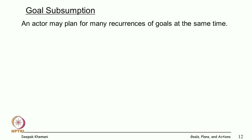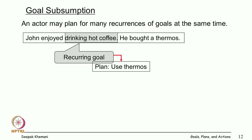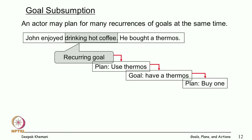There are two kinds of goal interactions: between the goals of one person, and between the goals of different people — both can be positive or negative. One is goal subsumption: for example, 'John enjoyed drinking hot coffee and he bought a thermos.' To understand this, you see that John is doing something which will make his goal of drinking hot coffee easier — he has a plan of using a thermos, so a sub-goal of having a thermos, so a plan of buying one.